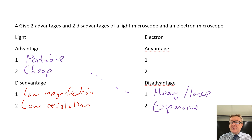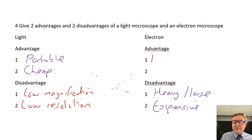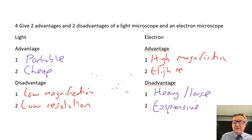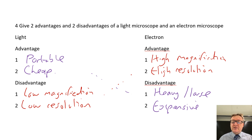The disadvantage of a light microscope is it has low magnification, which means it can't zoom in very much, and it has low resolution, which means the picture can't be particularly clear - you can't differentiate between individual points easily. The advantage of an electron microscope is it has high magnification and high resolution, so you can distinguish very easily between two individual spots.